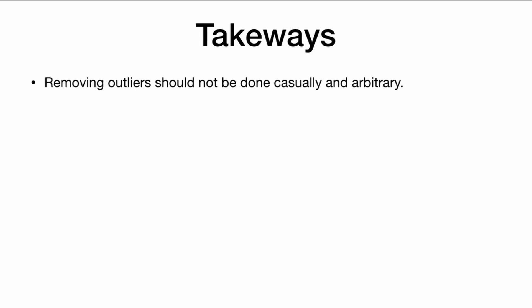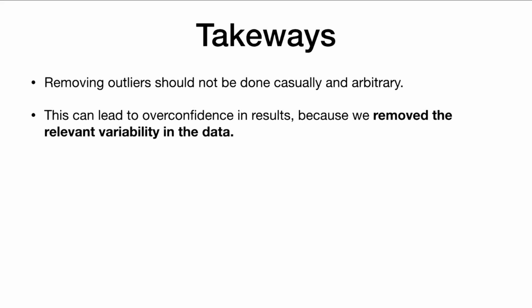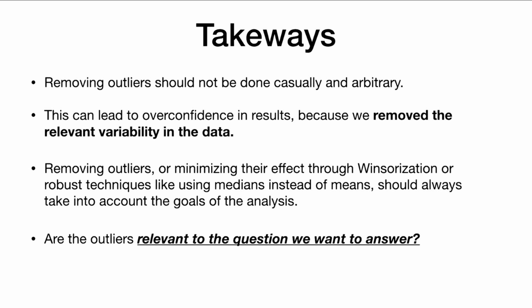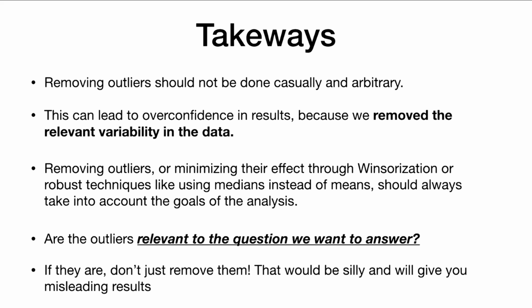So as takeaways: removing outliers should not be done casually and arbitrarily — this can lead to overconfidence in results because we removed relevant variability in the data. Removing outliers or minimizing their effects through Windsorization or robust techniques like using medians instead of means should always take into account the goals of the analysis. Are the outliers relevant to the question we want to answer? If they are, don't just remove them — that would give you misleading results.